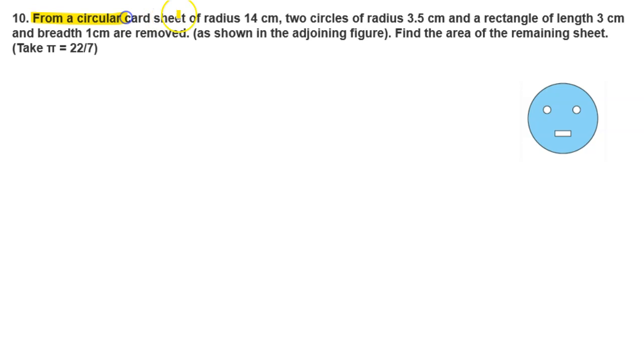Today's question is: from a circular card sheet of radius 14 cm, two circles of radius 3.5 cm and a rectangle of length 3 cm and breadth 1 cm are removed as shown in the adjoining figure. Find the area of the remaining sheet.